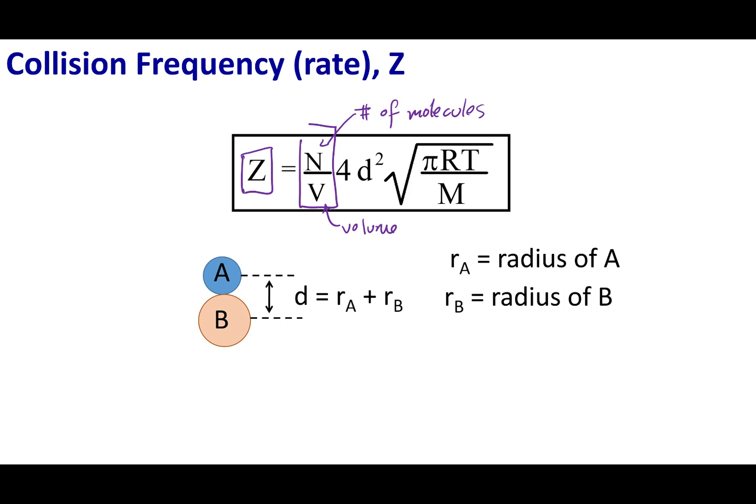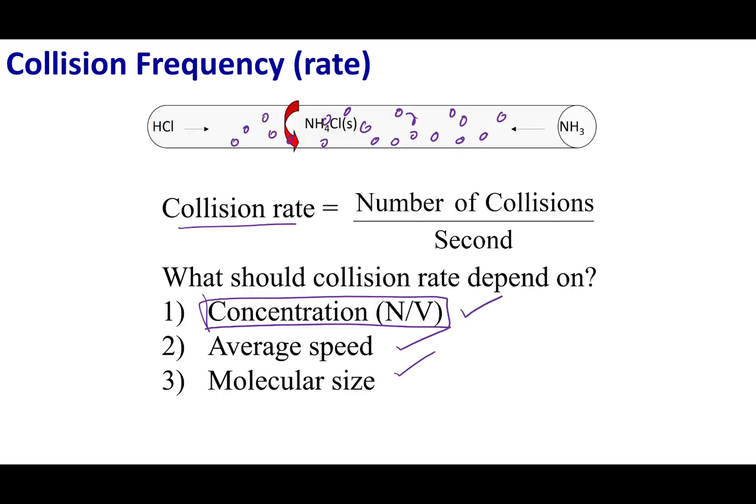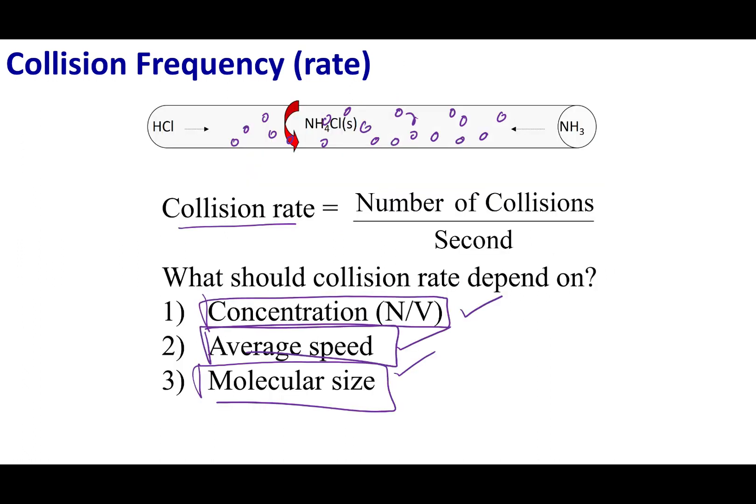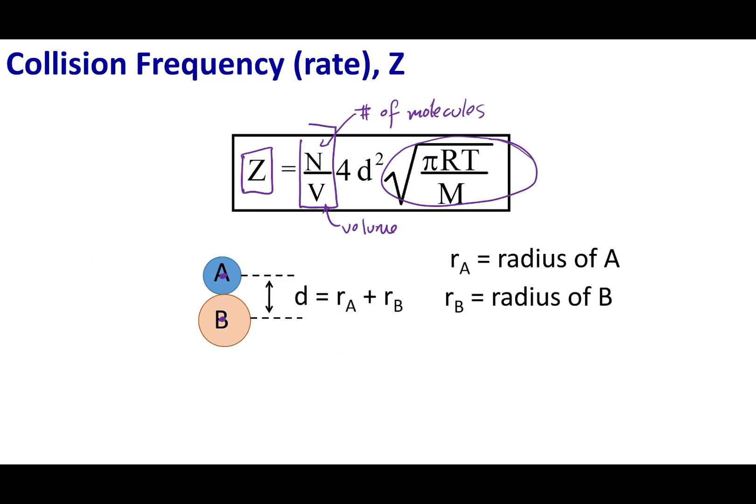d squared is going to be the distance between the center of one molecule and the center of another molecule. So this is a measure of the size of each one of these molecules. And the last term that you see right here, this is a measure of velocity. You see the RT, the square root over the molar mass. So this is a measure of speed. Putting all these things together, we can measure collision frequency.